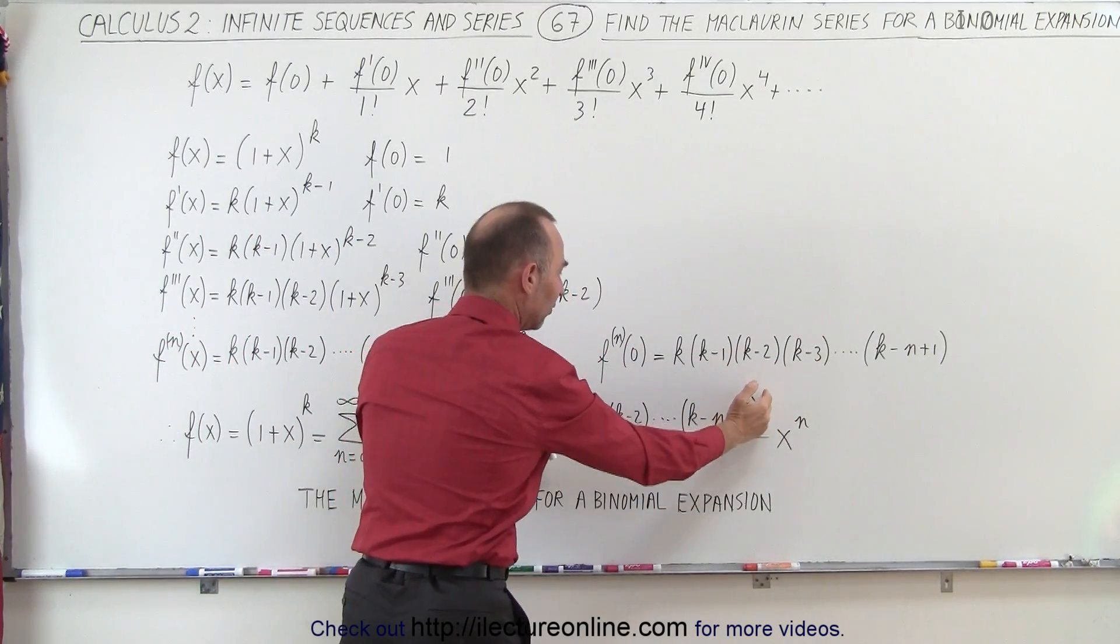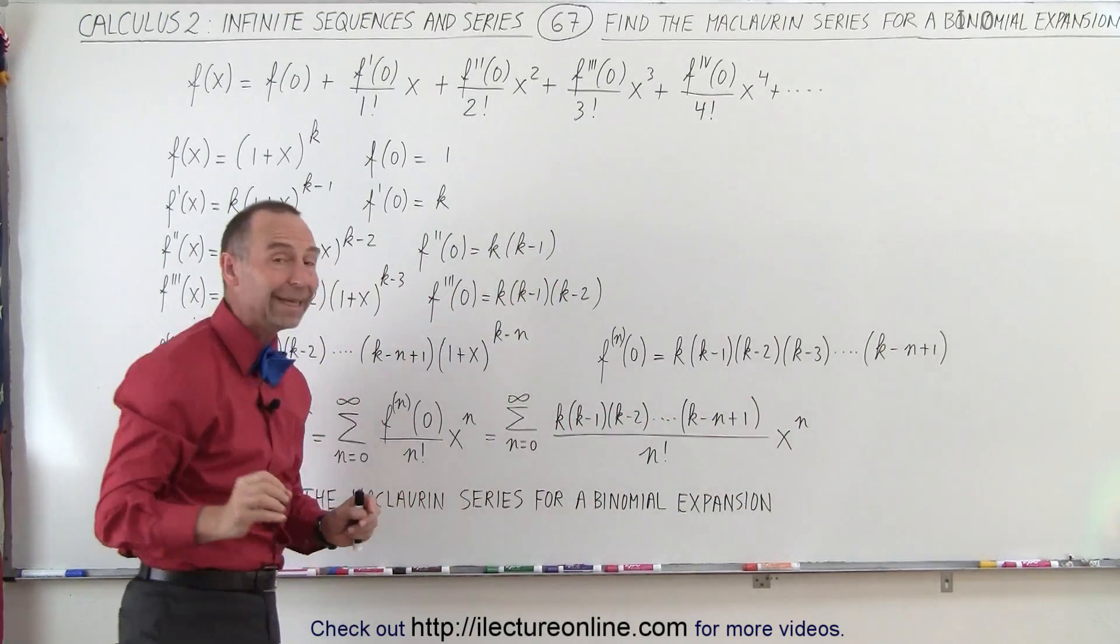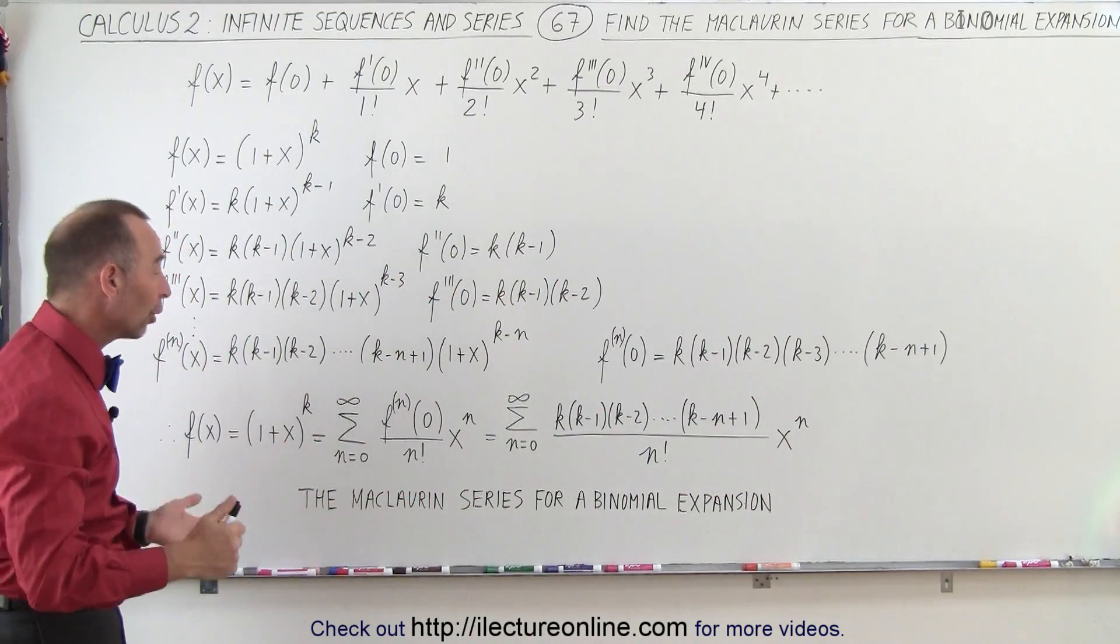So we have that here. So this, times x to the n, divided by n factorial, is the Maclaurin series of a binomial expansion.